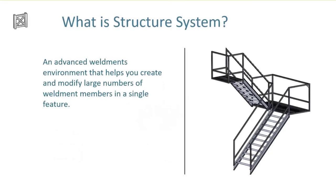The Structure System only came out in 2019, and as with a lot of newer big features, there were great enhancements in 2020. The basic definition is: it's an advanced Weldments environment that helps you create and modify large numbers of weldment members in a single feature. The key phrase there is 'in a single feature.' Weldments are still a great tool — this is not completely replacing that. Depending on what you're doing and what information you have available, Weldments or the Structure System may be a better choice.